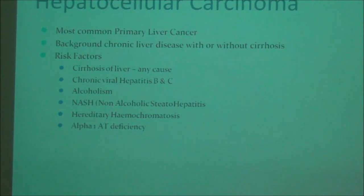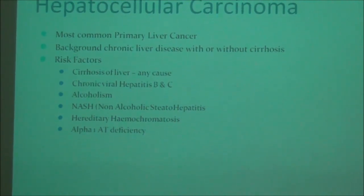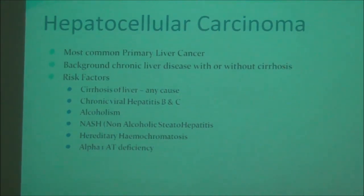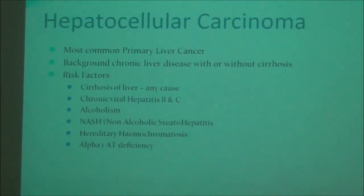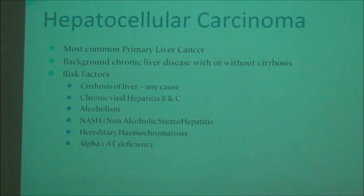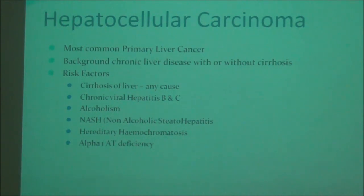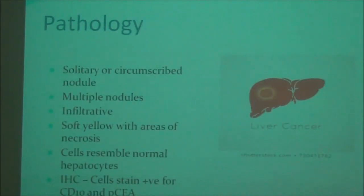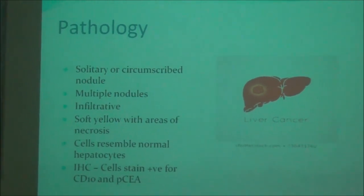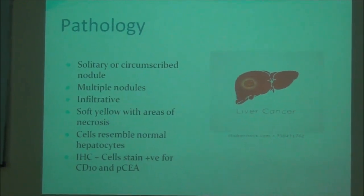By far the commonest risk factors in clinical practice in Pakistan are chronic viral hepatitis B and C leading to cirrhosis. Some patients have non-alcoholic steatohepatitis as a background disease, while others have an unknown cause of cirrhosis — called cryptogenic cirrhosis. Regarding pathology, hepatocellular carcinoma is usually seen as either a solitary or a circumscribed nodule.